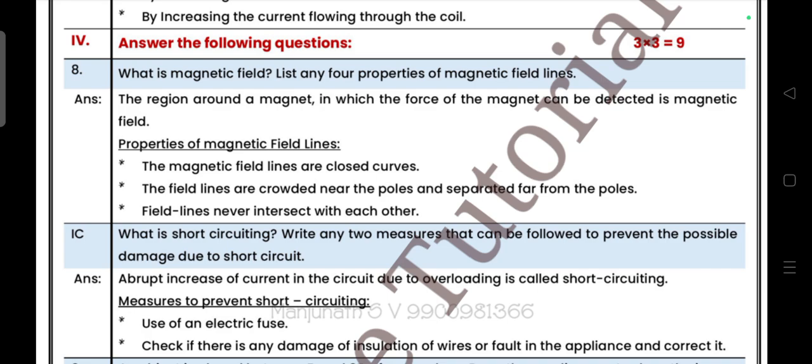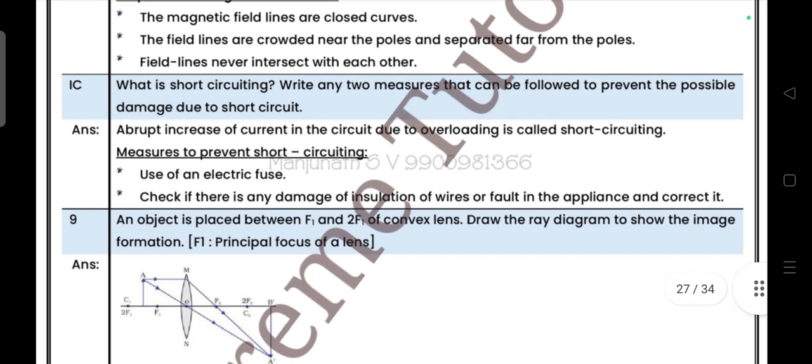Next, three mark question. What is magnetic field? List any four properties of magnetic field lines. Next question: What is short circuiting? Write any two measures that can be followed to prevent the possible damage due to short circuit.